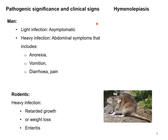Regarding pathogenic significance and clinical signs: infection caused by Hymenolepis nana or Hymenolepis diminuta is called hymenolapiasis. In light infection there are no clinical signs or symptoms — it is asymptomatic. In heavy infection, non-specific abdominal symptoms can be found including anorexia, vomiting, diarrhea, and abdominal pain. In rodents, light infection is also asymptomatic, but heavy infection leads to growth retardation, weight loss, and enteritis.